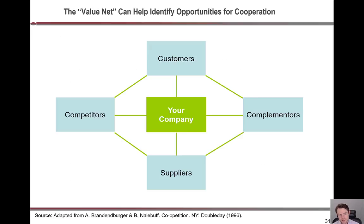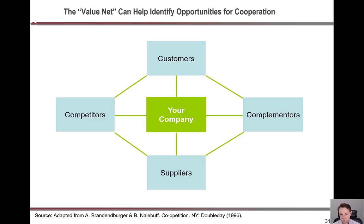Finally, the value net can help you identify opportunities for cooperation. Look around: are your customers someone you could integrate with in some type of alliance? Same with suppliers — consider a vertical alliance. Is there some way you and your competitors could ally together against common competitors or against a coming government regulation? And look at complementors — firms selling complementary products where working together can increase complementariness and make both sides work better.